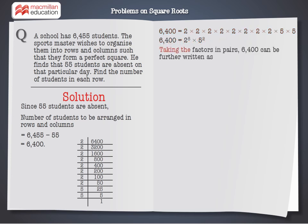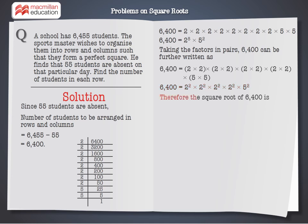On prime factorising 6,400 and taking the factors in pairs, 6,400 can be written as 2 squared into 2 squared into 2 squared into 2 squared into 5 squared. Therefore, the square root of 6,400 is 2 into 2 into 2 into 2 into 5, which is equal to 80.